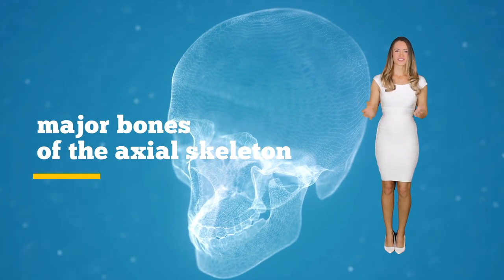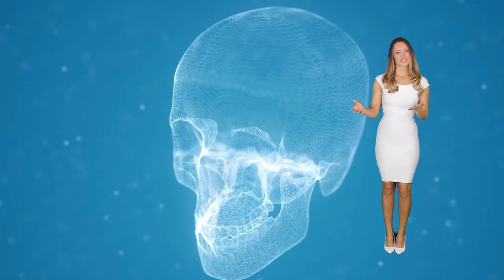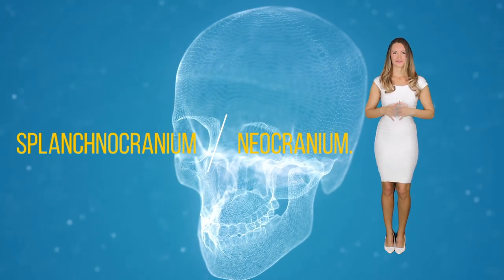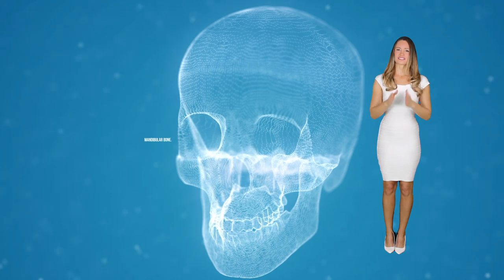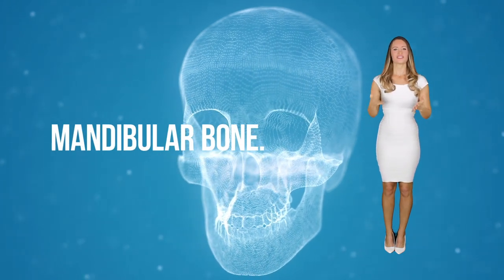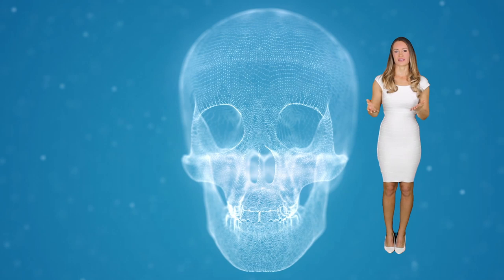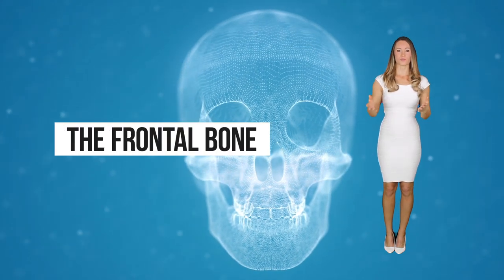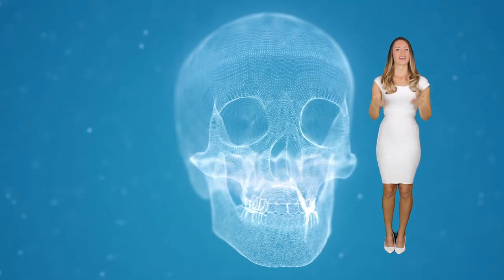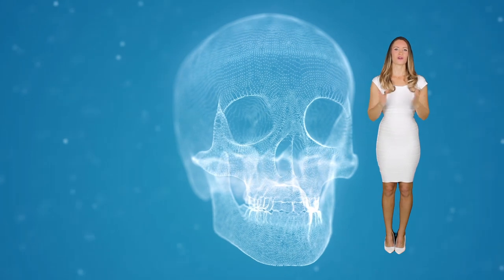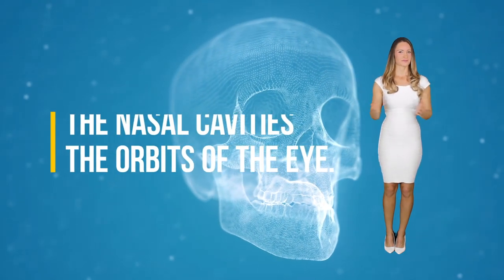One of the major bones of the axial skeleton is comprised of the splanchnocranium and the neurocranium. These bones make up the skull and they're all fused except the mandibular bones. The neurocranium consists of the frontal bone, which creates the forehead, and also a smaller portion of the nasal cavities and the orbits of the eye.